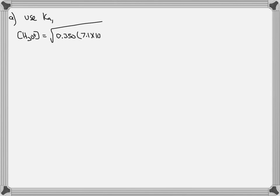A quick way to solve for the hydronium concentration, so long as the 5% rule applies, is the square root of the concentration multiplied by the Ka value, again using Ka1, and we get 4.98 times 10 to the negative 2.